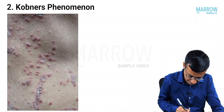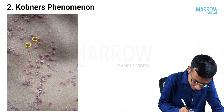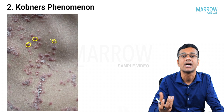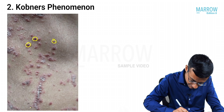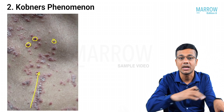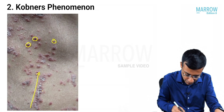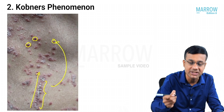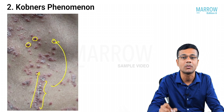In the picture, you can see the lesions of psoriasis — erythematous, scaly papules and plaques. Where the patient had a trauma, new psoriasis lesions appear along the line. These new lesions resemble the old lesions, which is why they are called isomorphic lesions.